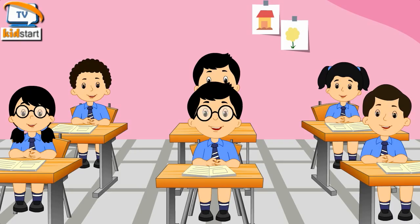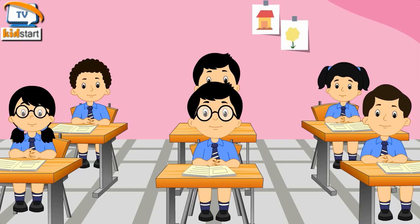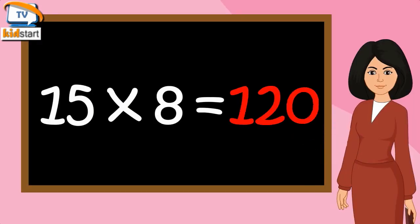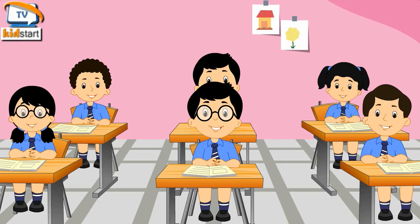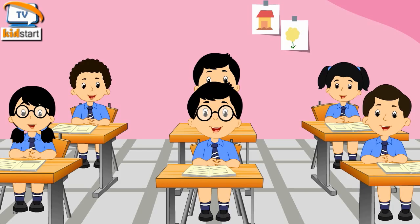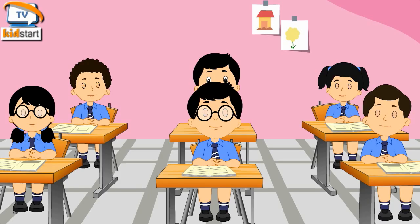15 6's are 90. 15 7's are 105. 15 8's are 120. 15 9's are 135. 15 10's are 150.